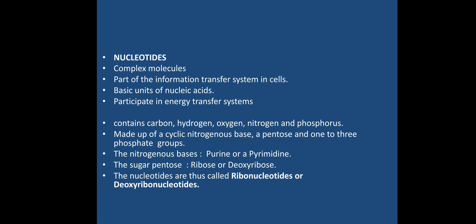Now we move to nucleotides. Nucleotides are complex molecules that are part of the information transport system in cells. Every organism carries information in the form of DNA and RNA, which must be transferred from generation to generation and within cells. DNA and RNA are built from nucleotides, and we will discuss their structure and function next.